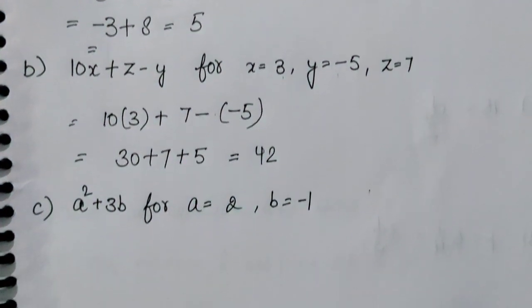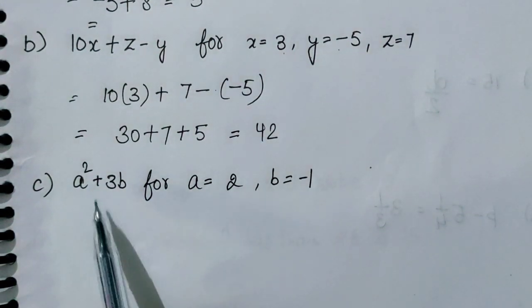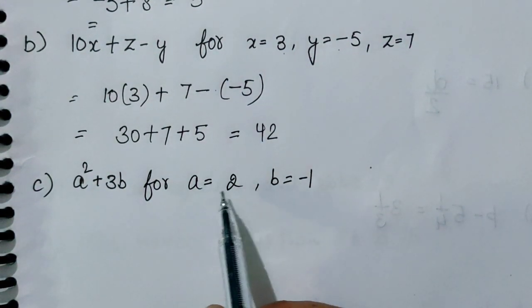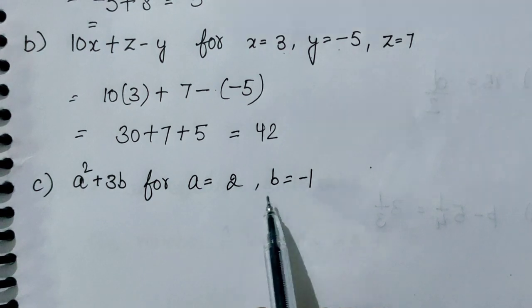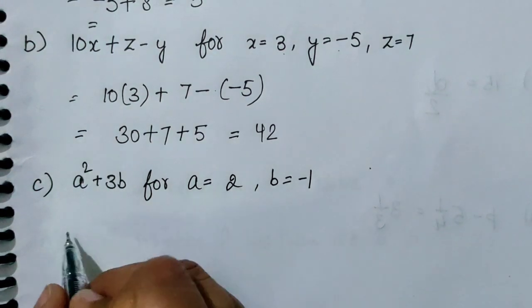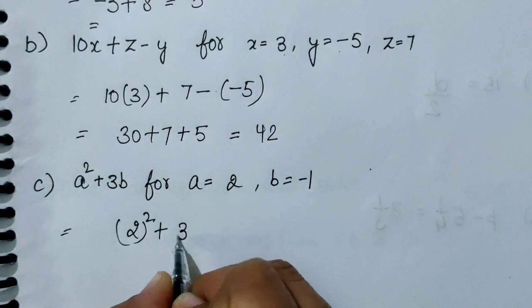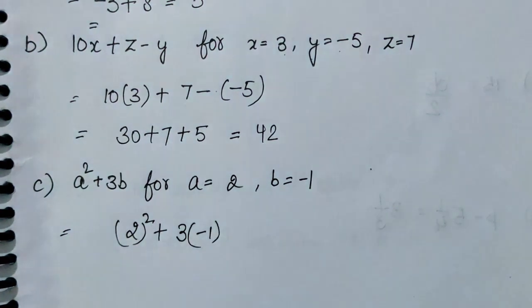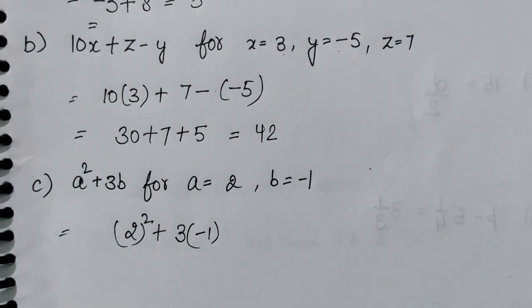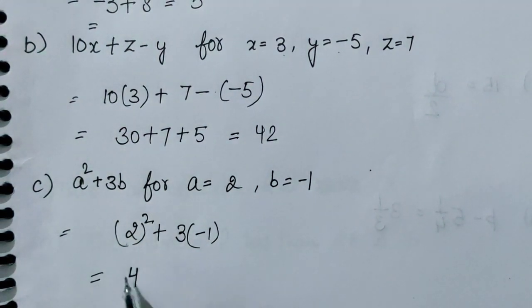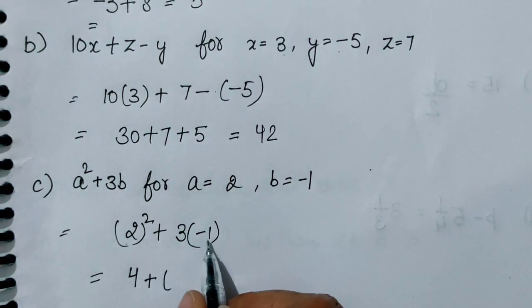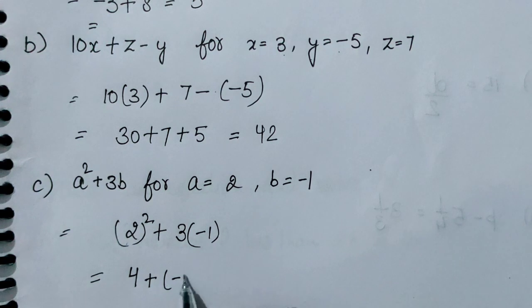Next equation की तरफ हम बढ़ते हैं: A square plus 3B। A की जो value दी गई है वो 2 है और B की है minus 1। So A है 2 power 2 plus 3 और B की है minus 1। 2 की square 4 है, plus लेकिन 3 को minus 1 से multiply करते हैं तो minus 3 आएगा। So 4 minus 3, आपका answer आएगा 1।